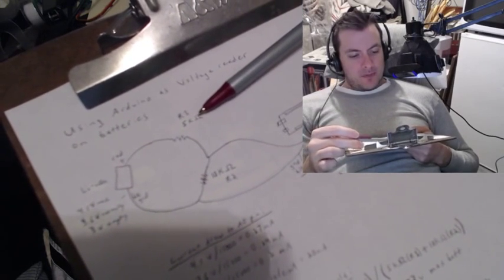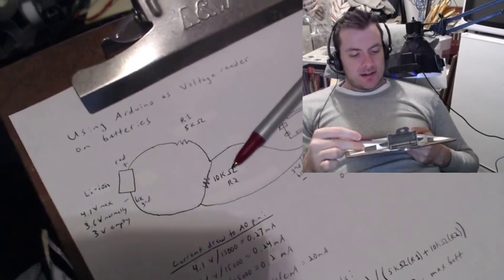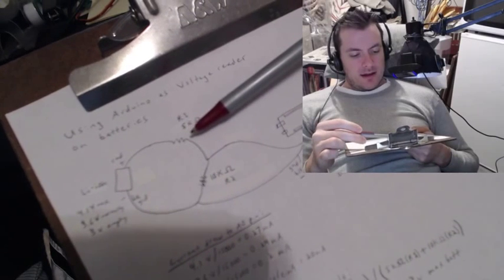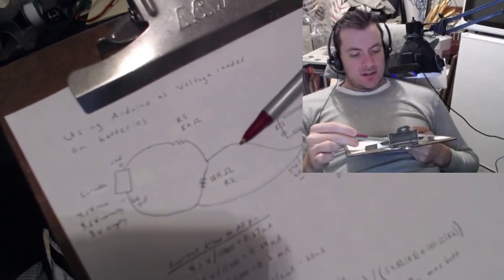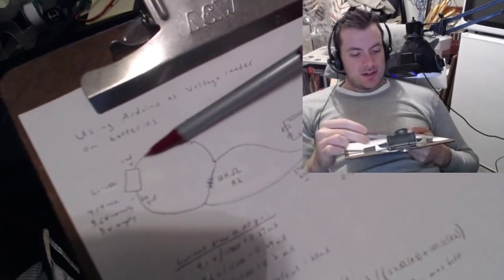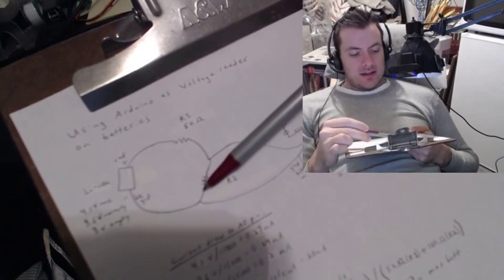So, our R1 is 5k ohms, and our R2 is 10k ohms. And you've got, this one is the voltage, this is voltage in, this is voltage out. And then this is your ground.